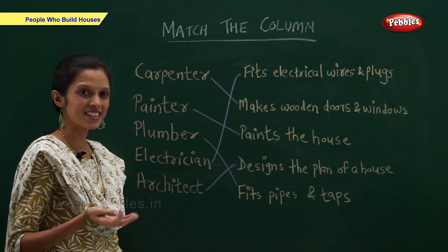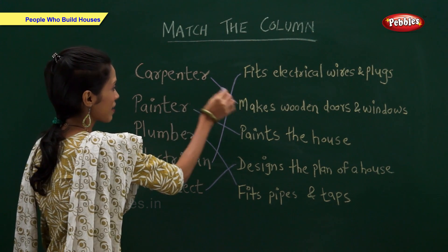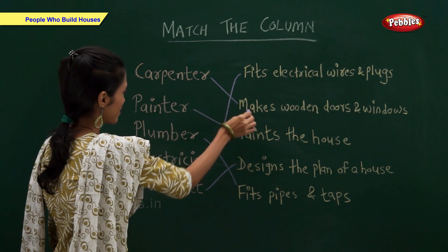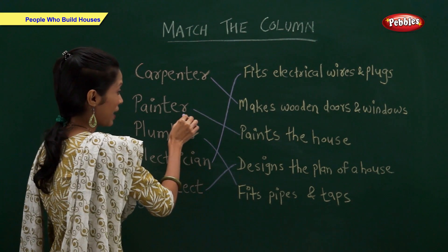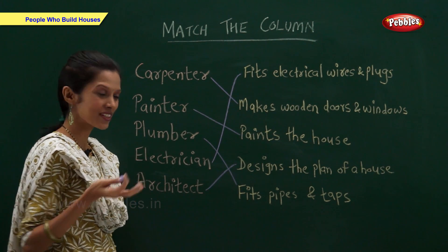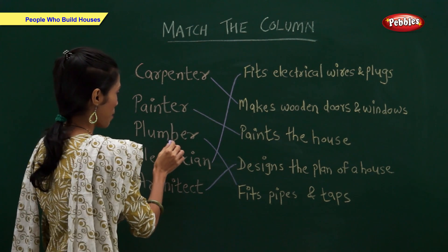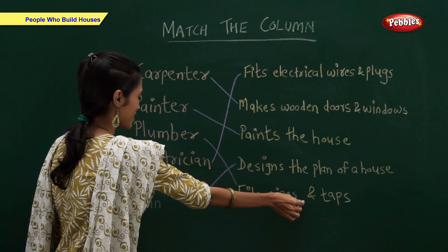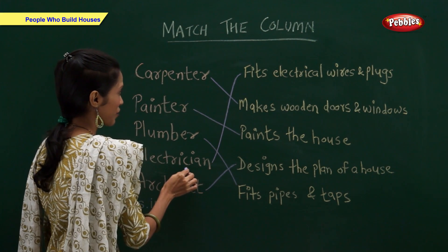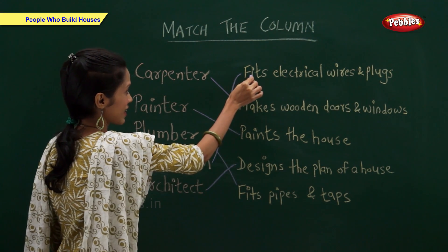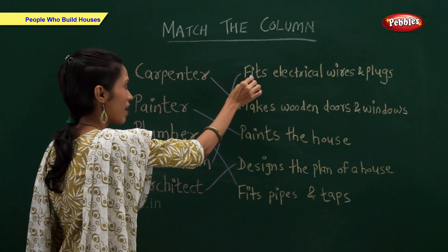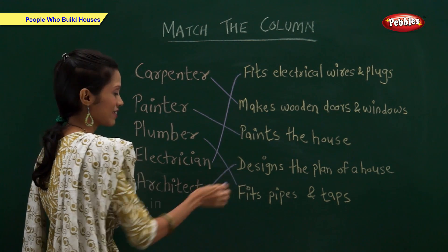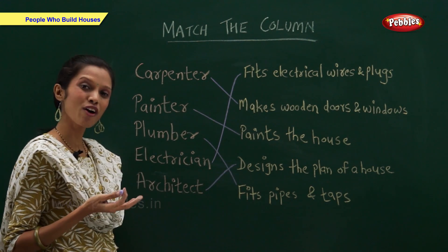Now let us summarize. Carpenter makes wooden doors and windows. Painter paints the house. Plumber fits pipes and taps. An electrician fits electrical wires and plugs. An architect designs the plan of a house.